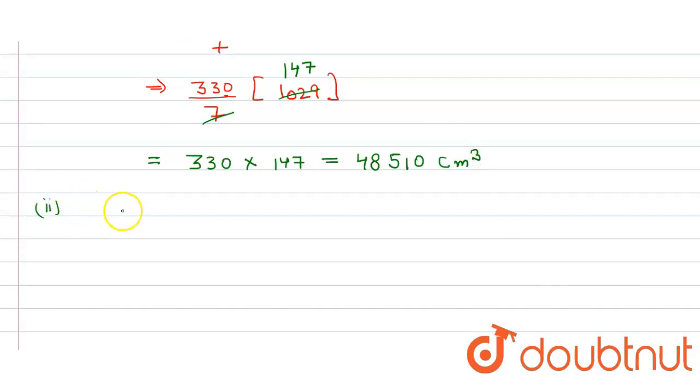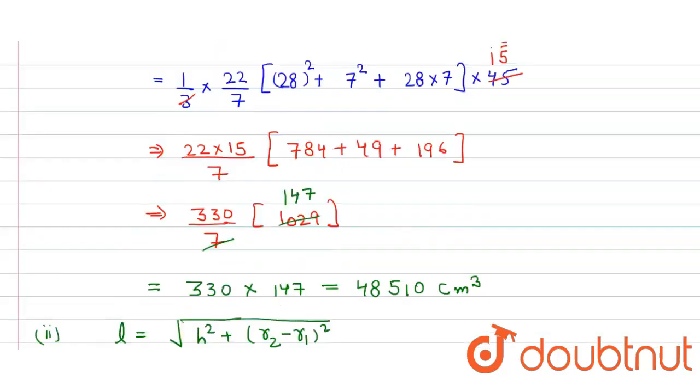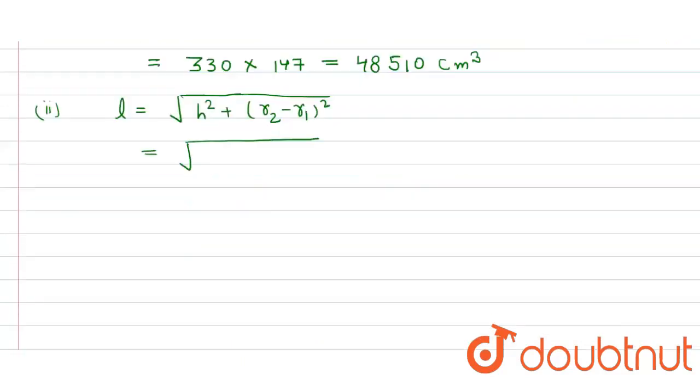In the second part, for the curved surface area we first calculate the slant height, which is equal to √[h² + (r₂ - r₁)²]. So here we simply put all these values. Height is equal to 45, so that one is equal to √[45² + (28 - 7)²].